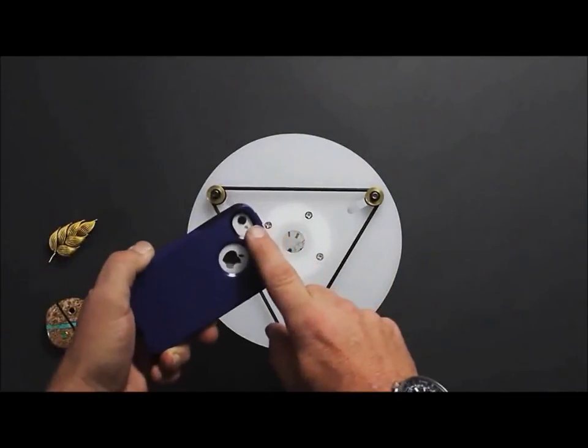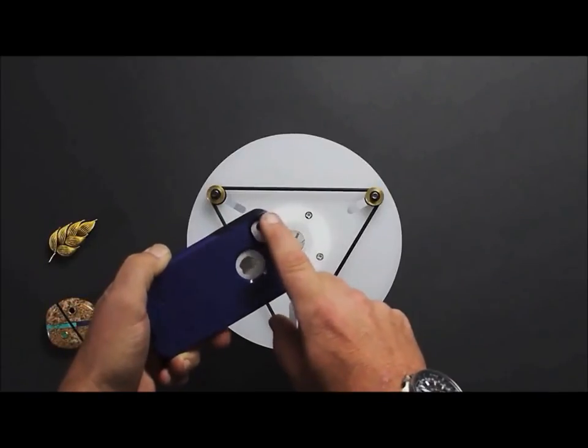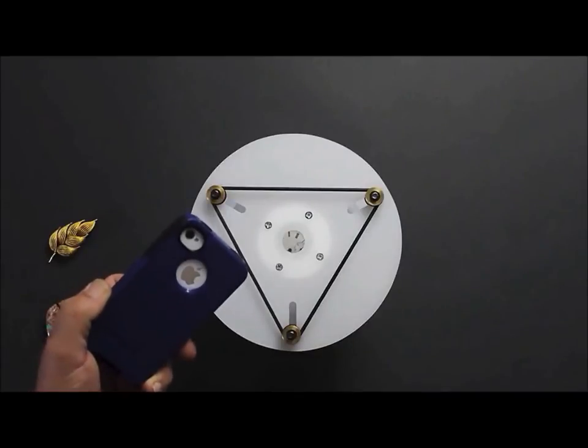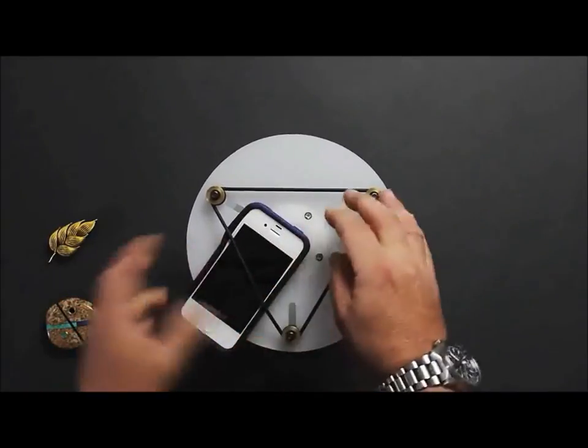Then locate the camera on your phone. Doesn't matter if it's in the corner or in the middle. The Nimbus will hold both types. Just lift the band and line up.